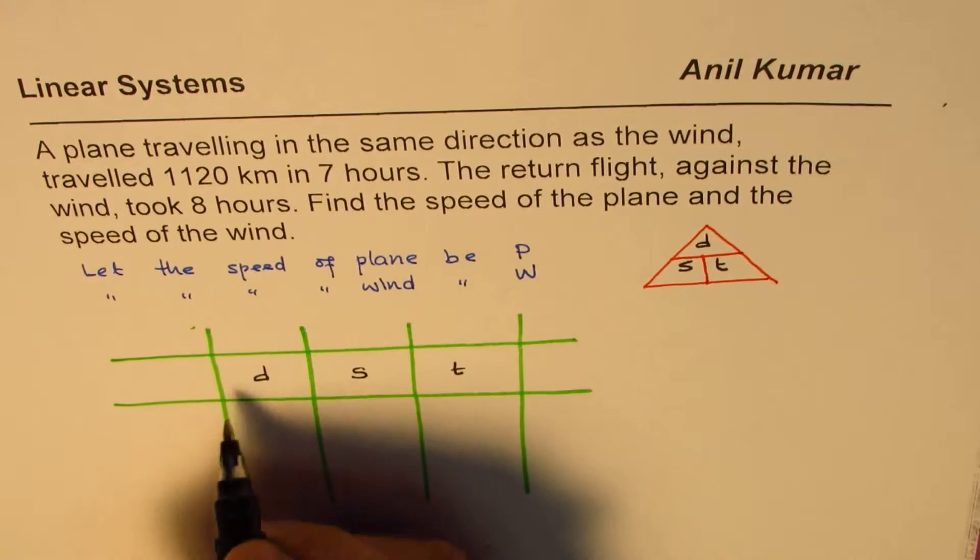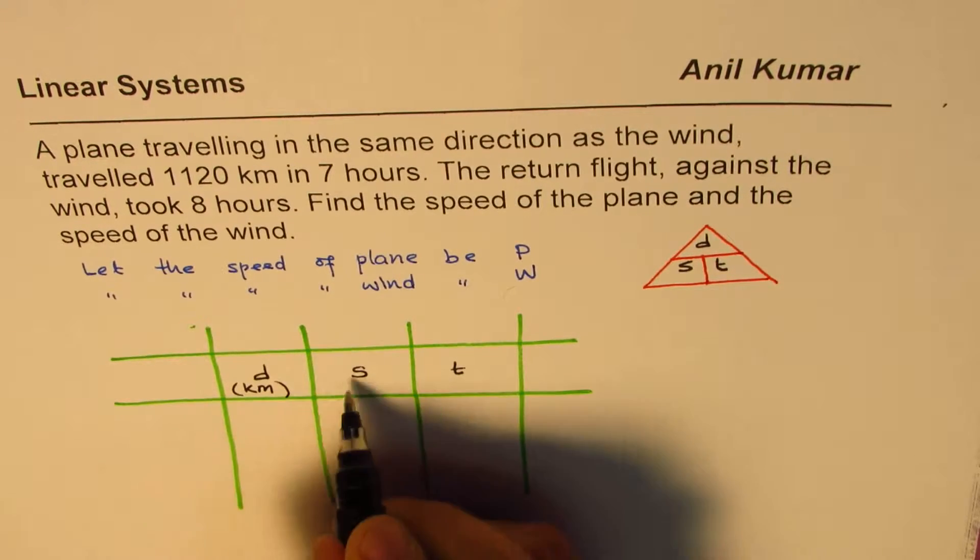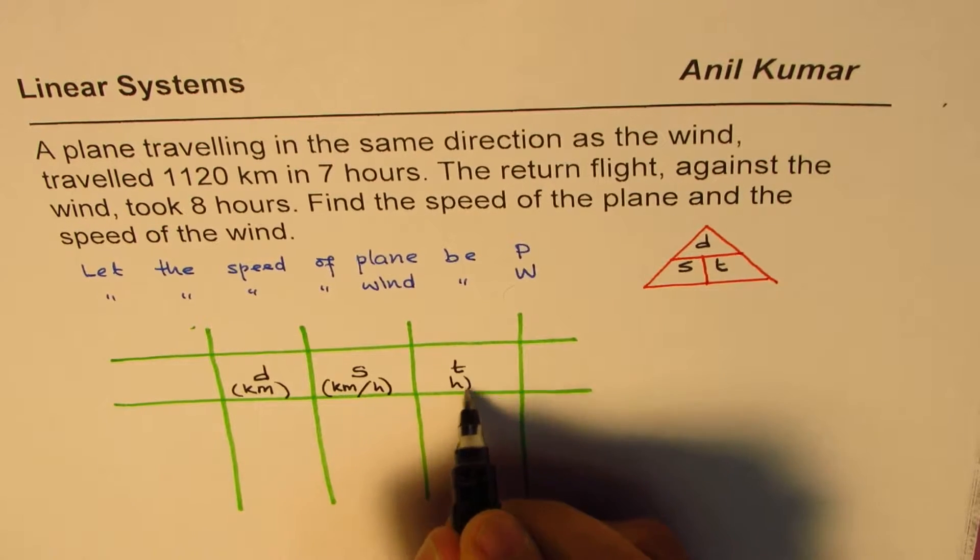So we have distance which is equal to speed into time. In our case, distance is in kilometers. Speed is in kilometers per hour. And time is in hours.